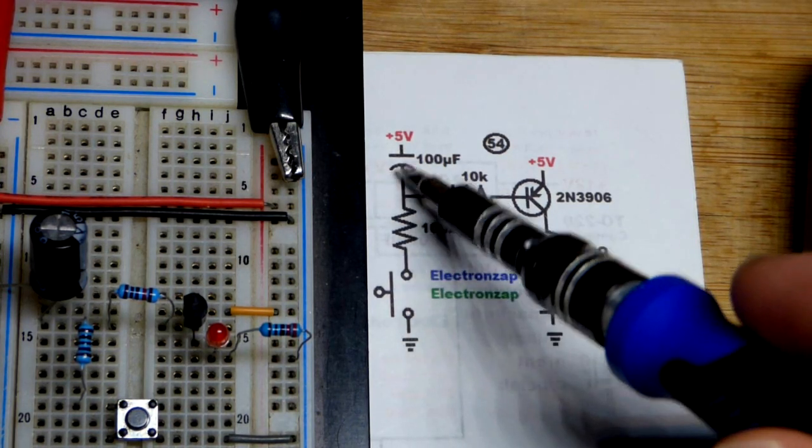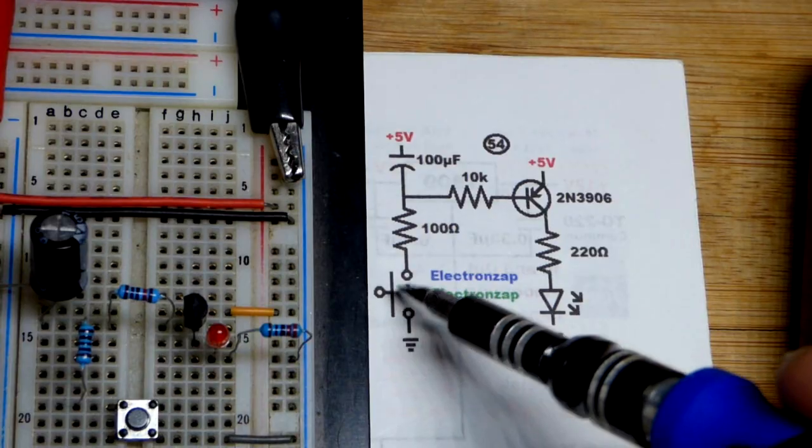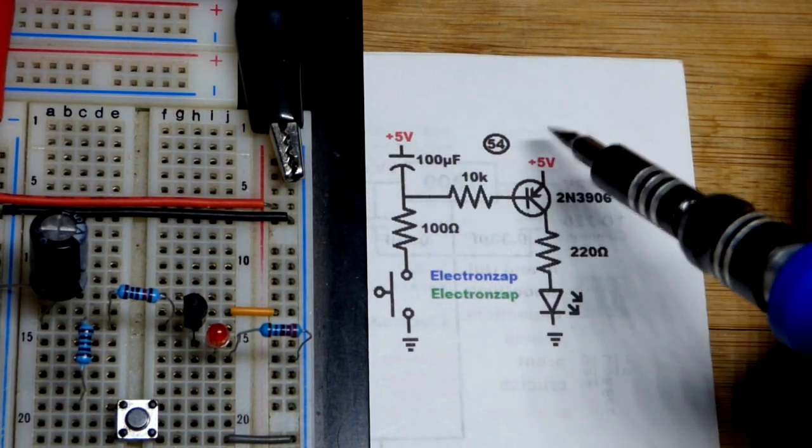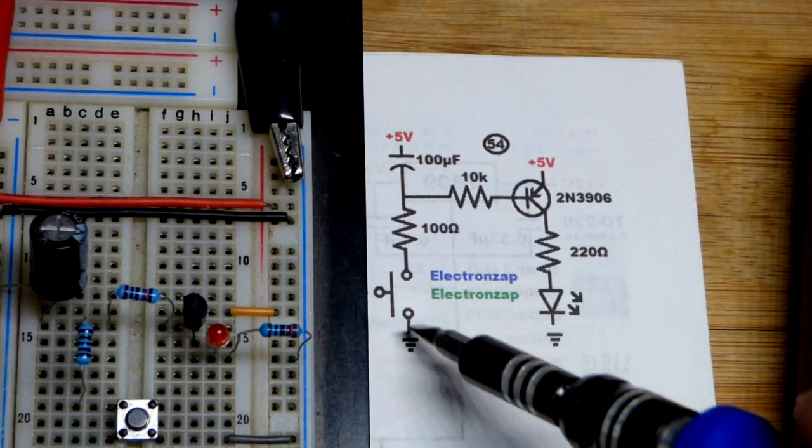And it will charge the capacitor pretty quick. We could get rid of it. We close the switch. That will instantly charge the capacitor. Again, about the same amount of current is going to go to emitter base.